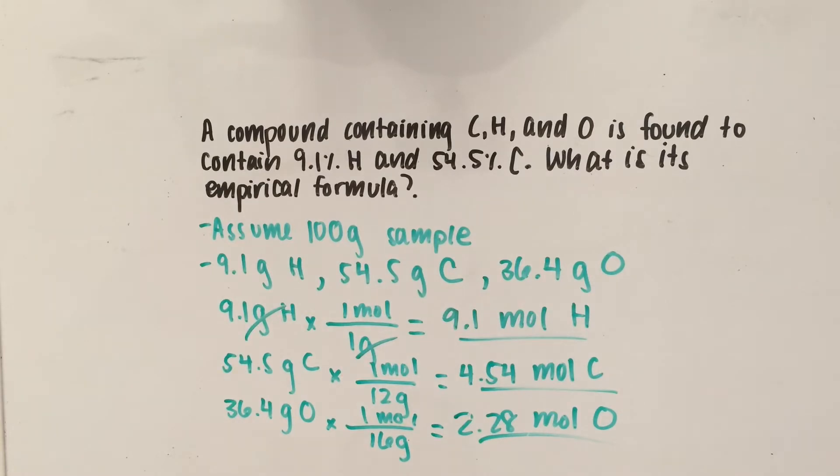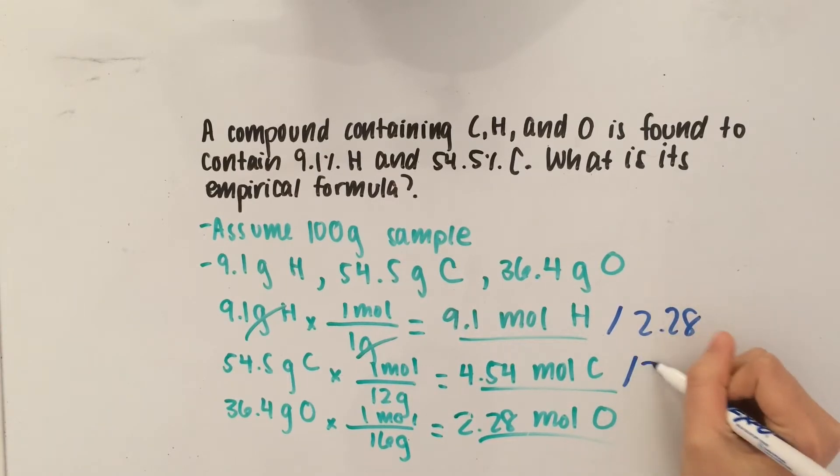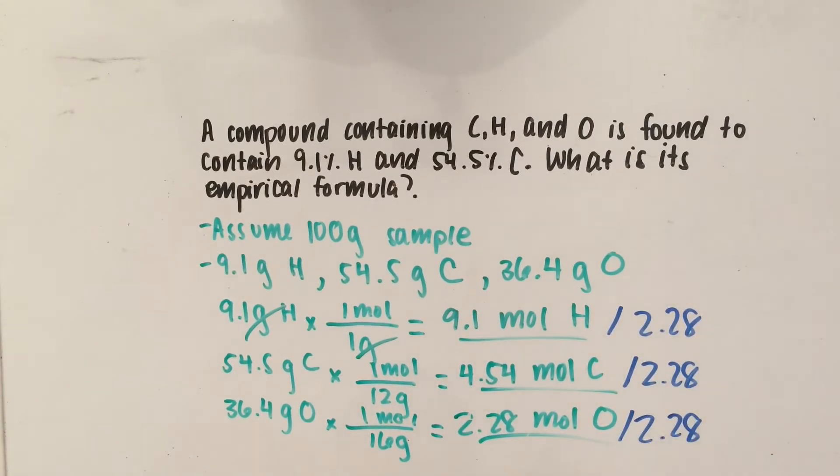So, we'll have to divide 9.1, divide that by 2.28, divide this by 2.28, and finally, we divide itself by 2.28.